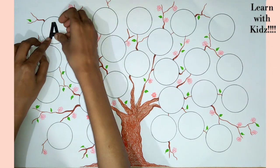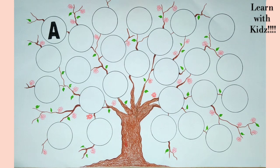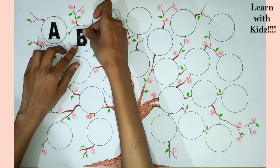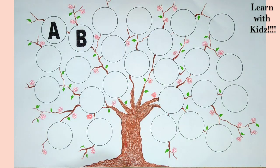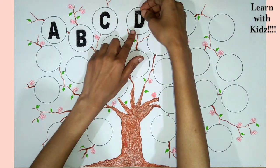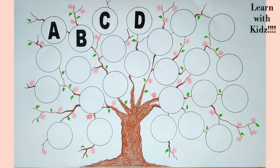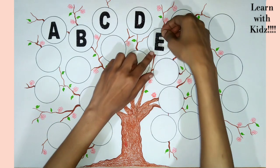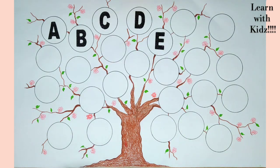A for apple. B for ball. C for cat. D for dog. E for elephant.